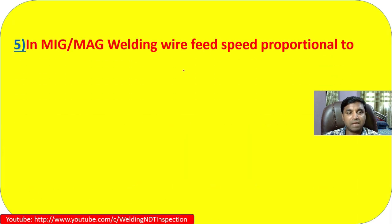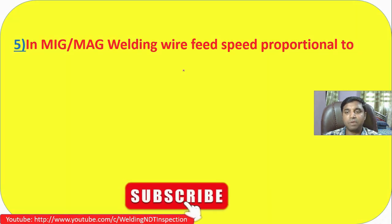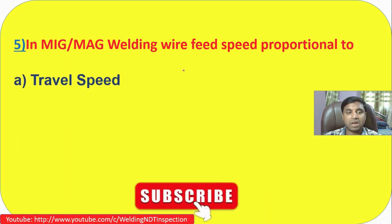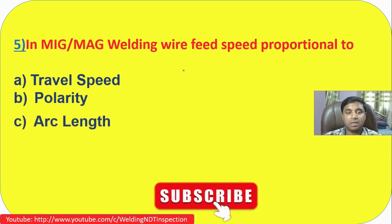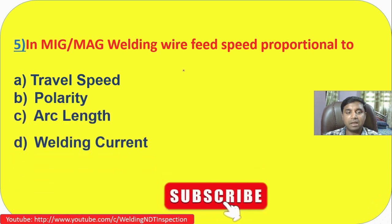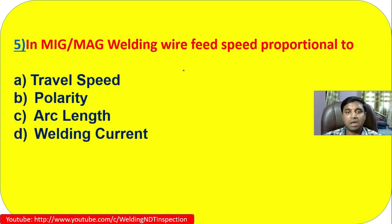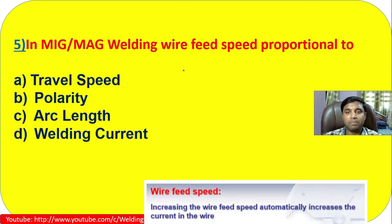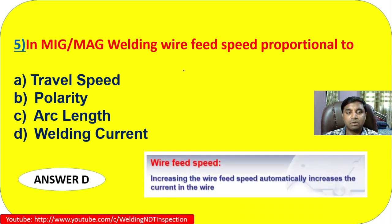Question 5: In MIG-MAG welding, wire feed speed is proportional to what — travel speed, polarity, arc length, or welding current? In MIG-MAG welding, wire feed speed is proportional to the welding current. Increasing the wire feed speed automatically increases the current in the wire.